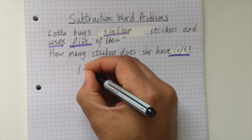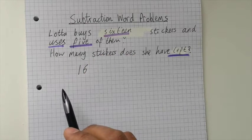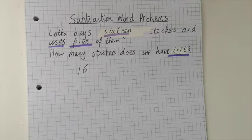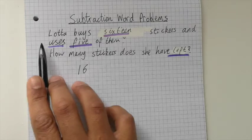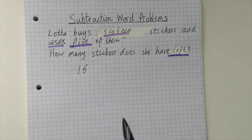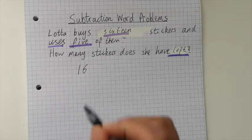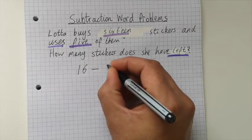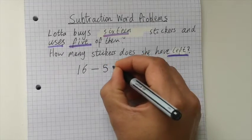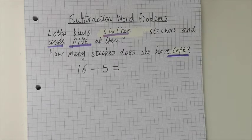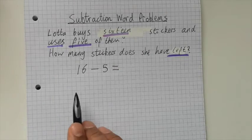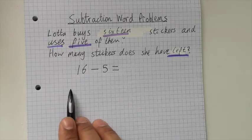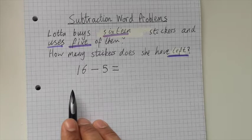We'll try and write it nice and big so you can see. And then how many did she lose or use? How many do we need to take away? Let's look for our other number - it's 5. So we now know that our number sentence is 16 take away 5. Now we can use our deans. Which number do we draw - do we draw the 5 or do we draw the 16? What do you think? That's right, the 16.